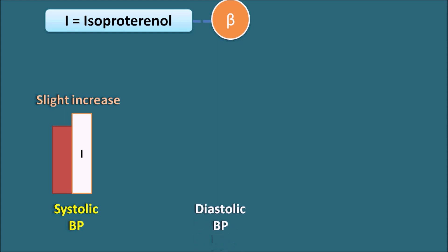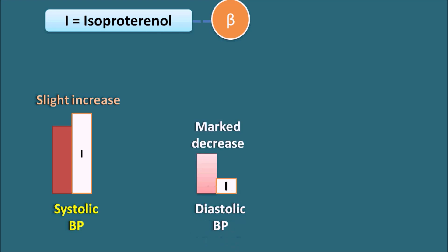For diastolic blood pressure, isoproterenol produces a marked decrease. Because isoproterenol is selective for beta receptors, when acting on beta-2 receptors it produces marked vasodilation, resulting in a significant decrease in diastolic blood pressure. This action is attributed to beta-2 receptors.